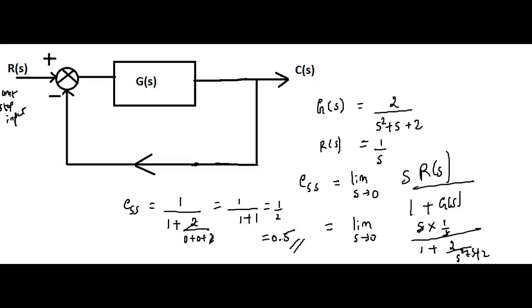So we have a steady state error of 0.5 in this control system, which has transfer function G(S) = 2/(S²+S+2) with a step input of value 1. This means in the steady state we get an output of 0.5, so the error is 1 − 0.5 = 0.5, which matches our calculation. Let's look at the step response of this transfer function to correlate with the graph.